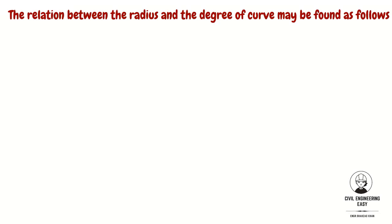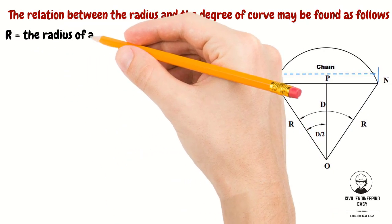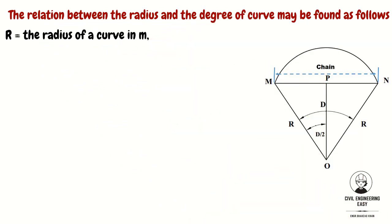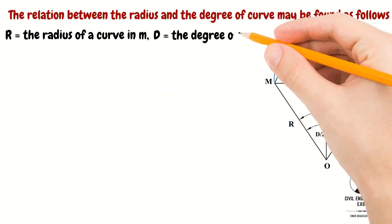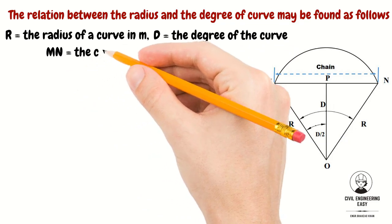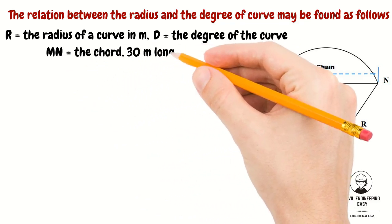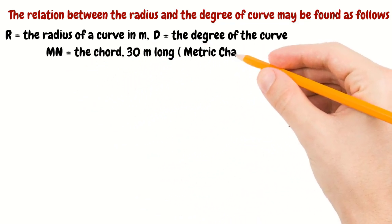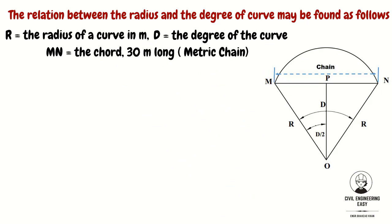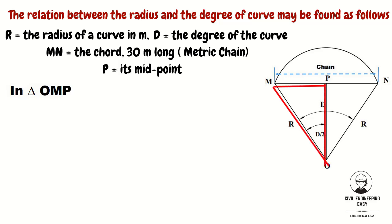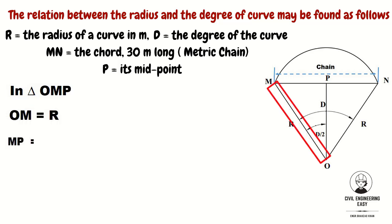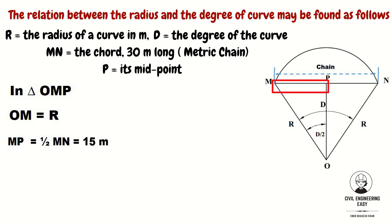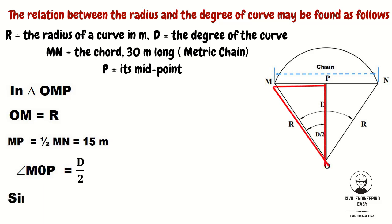Now in the metric system: R equals the radius of the curve in meters, D is the degree of the curve, and MN equals the chord length — equal to one metric chain, that is 30 meters long. P is equal to its midpoint. In triangle OMP, OM equals R, MP equals half of MN, which equals 15 meters. Angle MOP equals D/2.